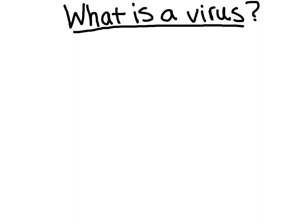What exactly is a virus? This is a tricky question to answer because there are many different types of viruses, each with their own special structures and functions. However, there are some patterns among them. First, they tend to have two major parts. Their outer casing, made of protein, is called a capsid.